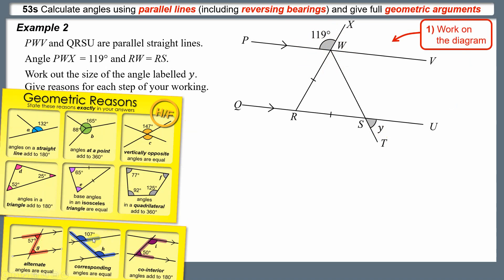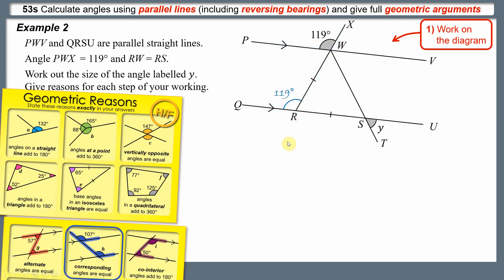We can spot an upside-down back-to-front F shape, which makes angle QRW corresponding with angle PWX. So QRW is 119 degrees as well. Now we're down at the other parallel line. Focusing on this part of the diagram, we have angles on a straight line, so 180 minus 119 gives us 61 degrees for the angle inside the triangle.